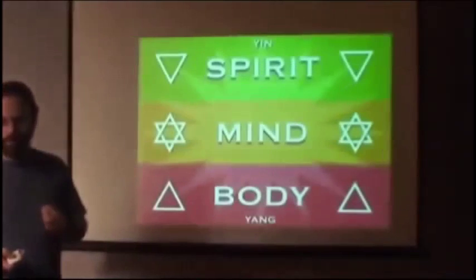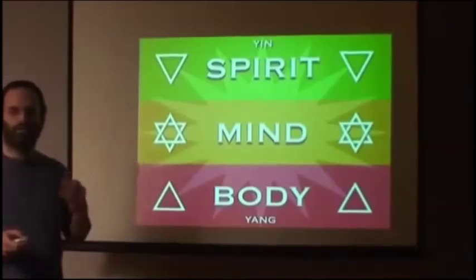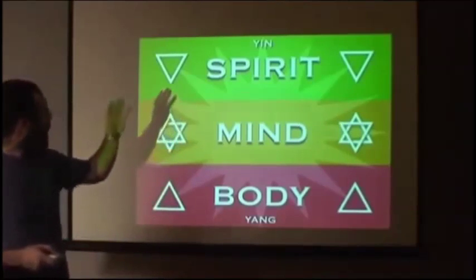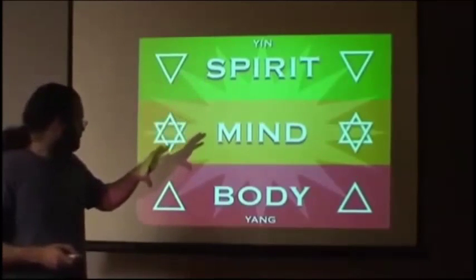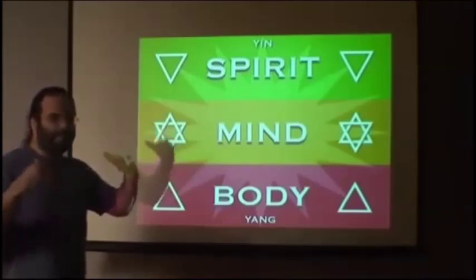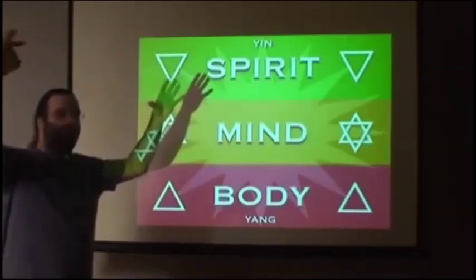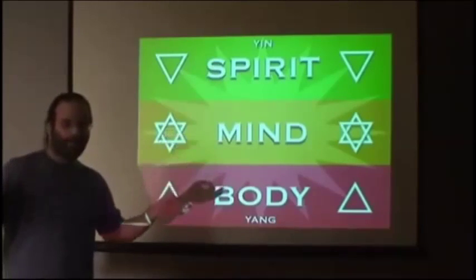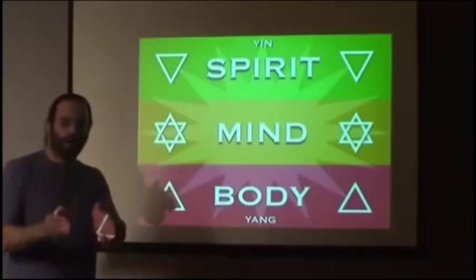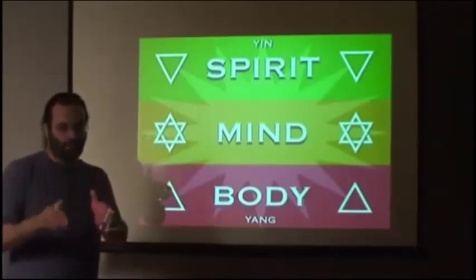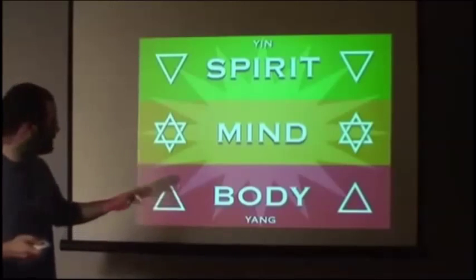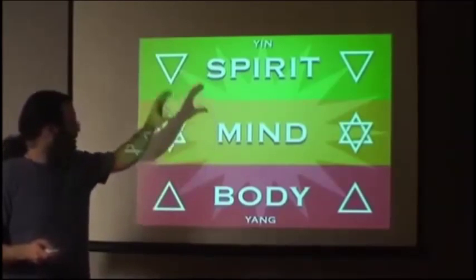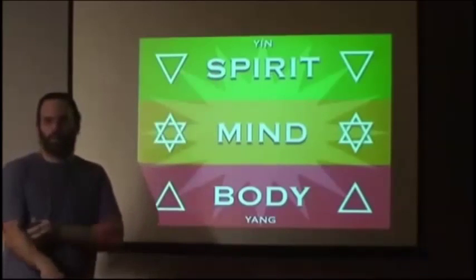When you look at the hypercube ideology, it is representative of the mind existing inside the construct of matter. You have matter being the outer part of the cube and mind is the inner part of the cube. This correlates to the levels of body, mind, spirit, levels of consciousness that we saw in part one.